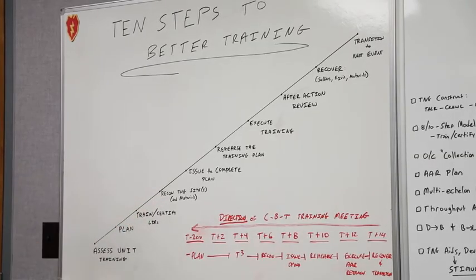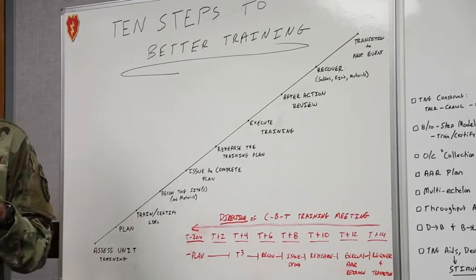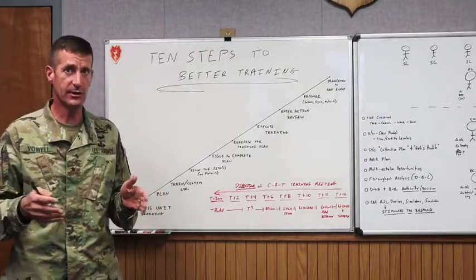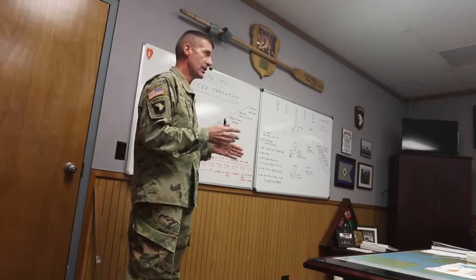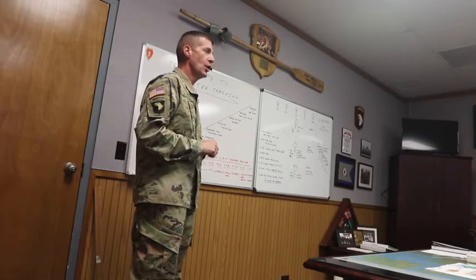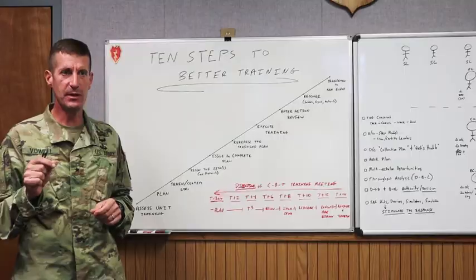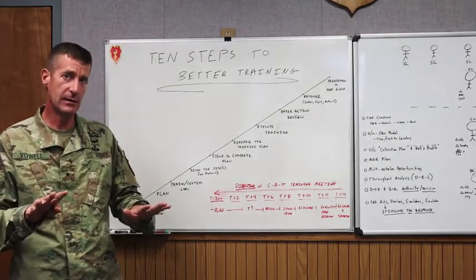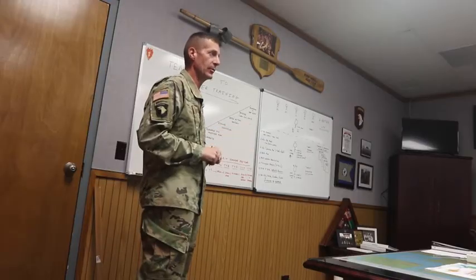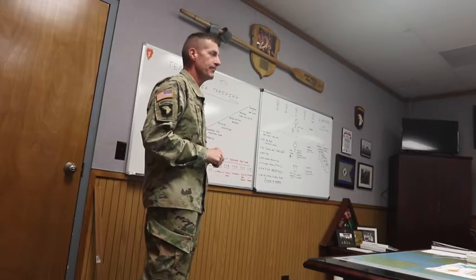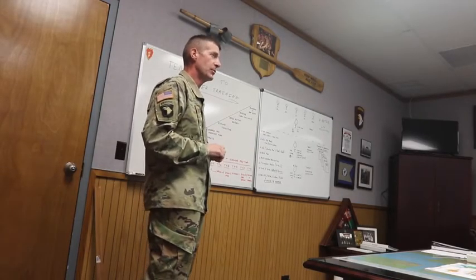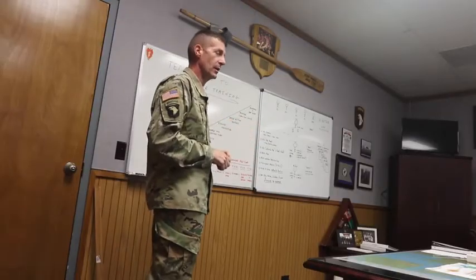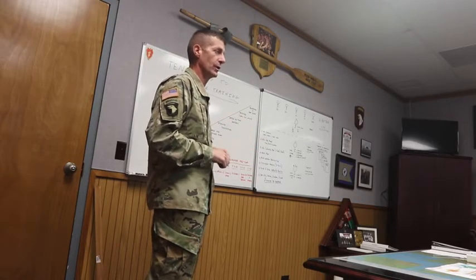Next, we want to recon the training site and materials. Make sure we know where we're going and that it's available. Classroom space on most installations is a challenge, and range operation space is a challenge. Make sure those training sites, facilities, and materials are identified, and have alternative plans if your primary training site is not available. Cross-coordinate with those who support your training in classroom or range environments, whether it's live, virtual, or constructive.